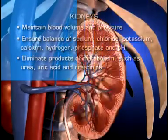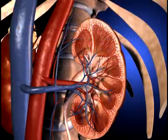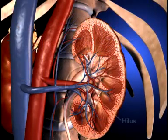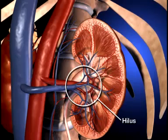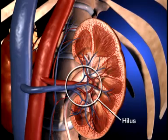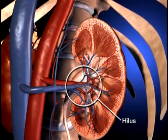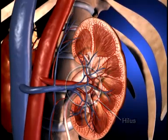The medial border of the kidney is indented by a deep fissure called the hilus, where the blood vessels, nerves, and ureters connect to the kidney.